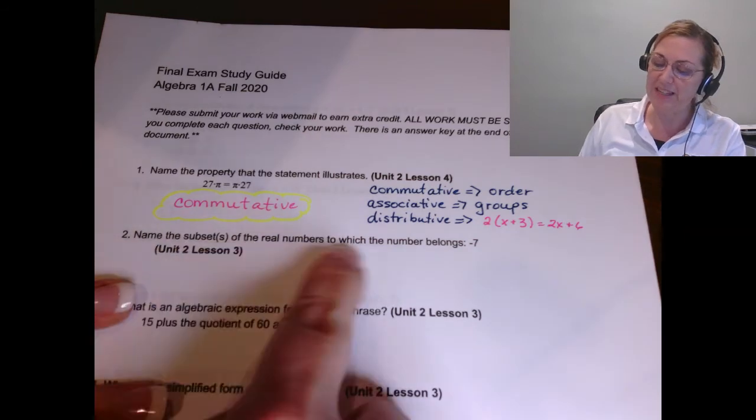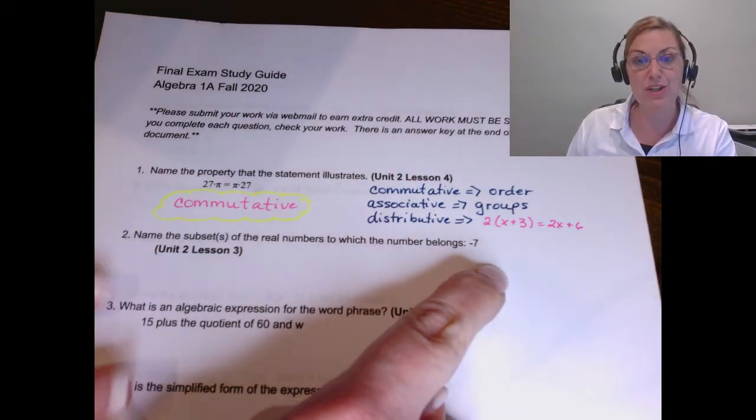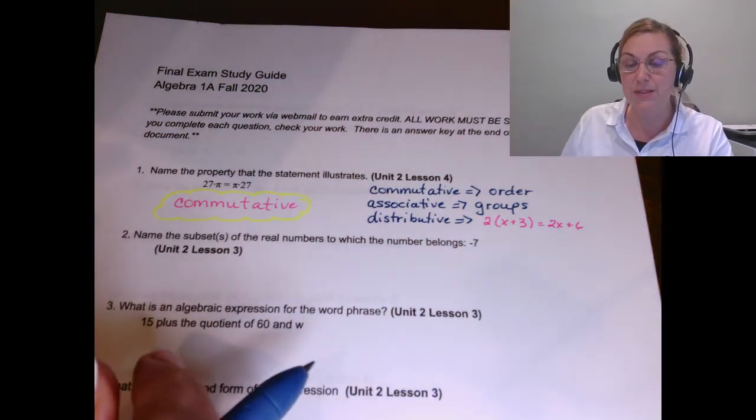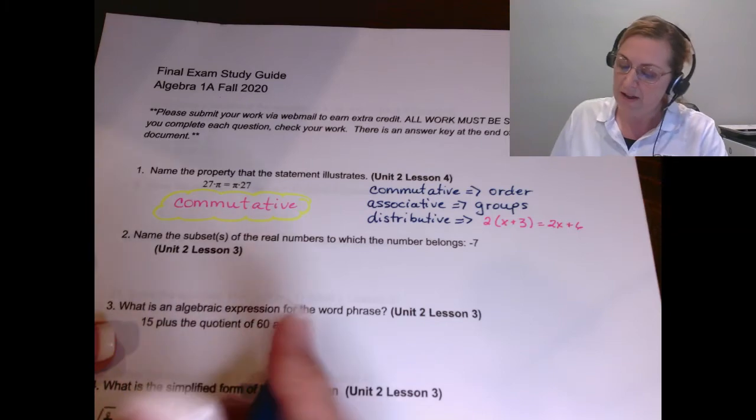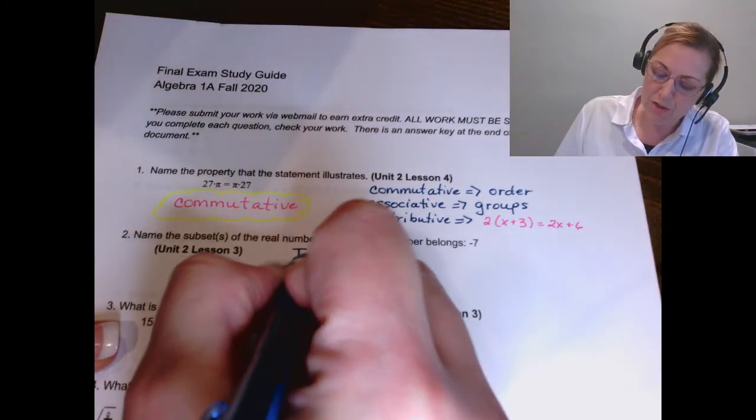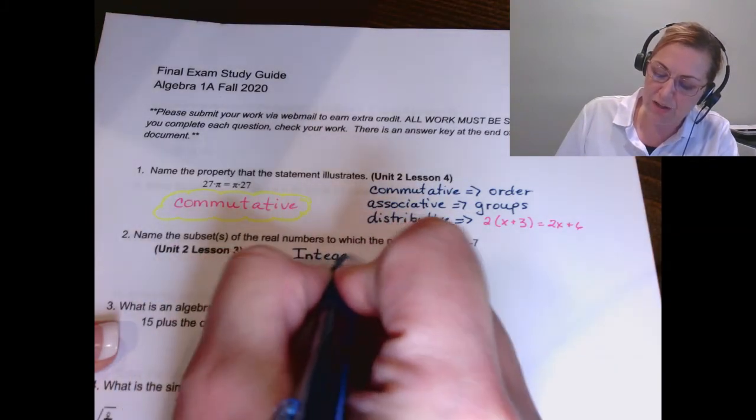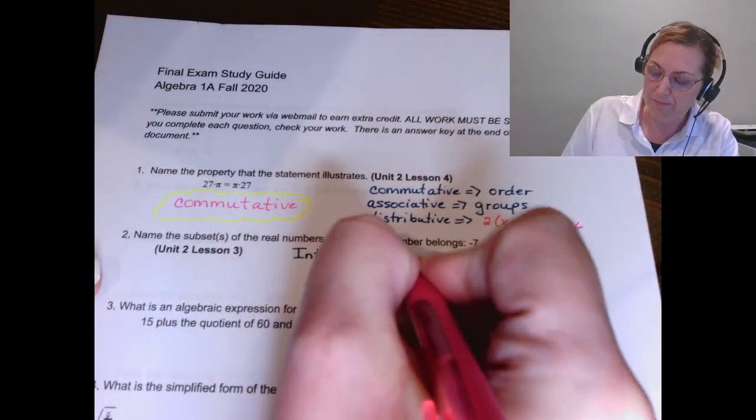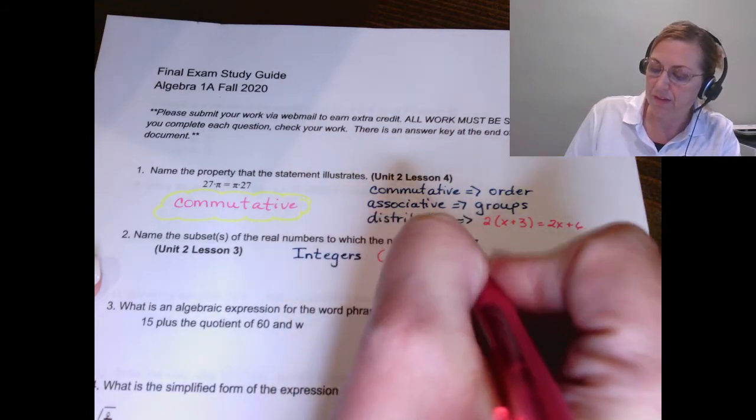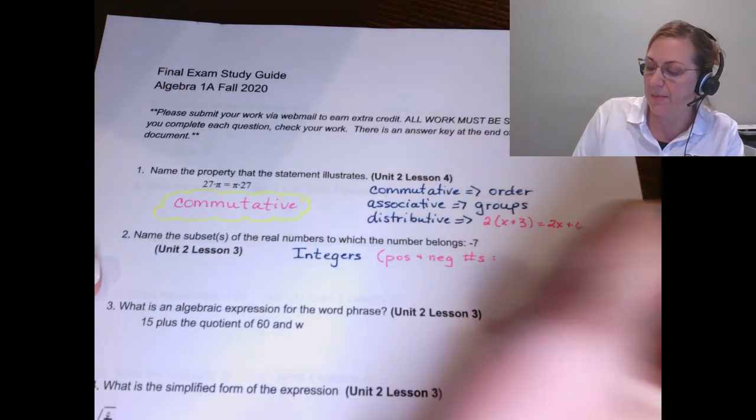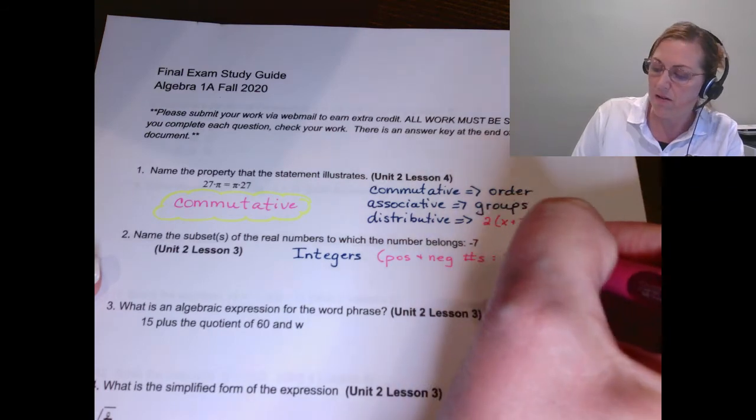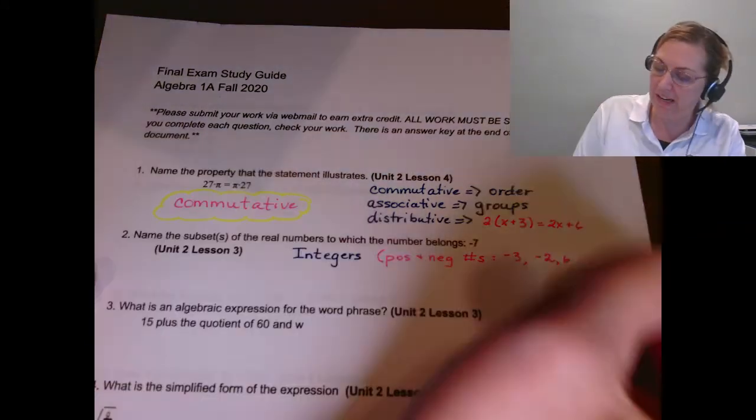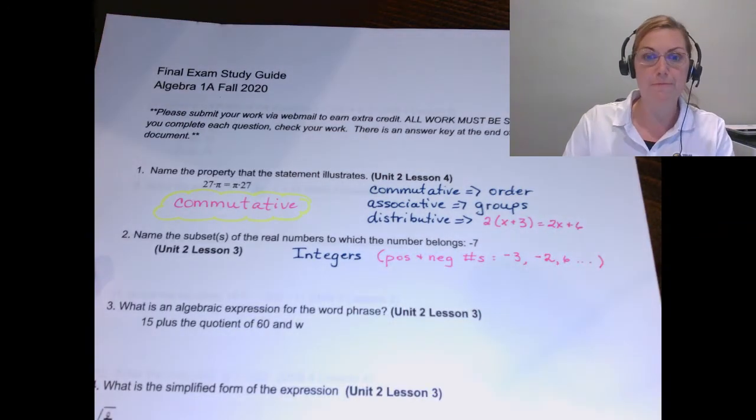Number two asks me to name the subsets of real numbers to which the number negative seven belongs. Negative seven, because it's negative, I know it's got to be in the integers. So you'll make a note to yourself that integers are positive and negative whole numbers. When I do these, I'm going to give us some examples. I don't put all of them, but I gave you a few examples of what integers are.